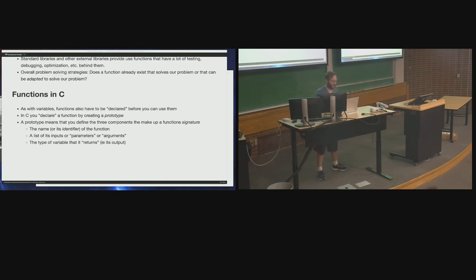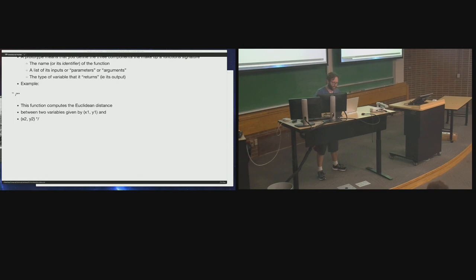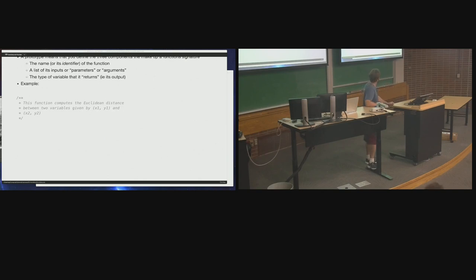Let's take a look at a very simple example — a distance function. This function computes the Euclidean distance between two points given by x1, y1 and x2, y2. I'm using doc-style comments — the slash-star-star with a vertical line of stars ending with star-slash — to document what the purpose of this function is. From this point on, any function that you write needs to have documentation. Give a plain English explanation of what the function does.